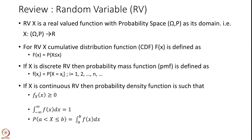If X is a discrete random variable, then we defined a probability mass function, small f of X_i, which equals the probability that random variable X takes on a particular value X sub i, where i varies from 1, 2, 3, etcetera. Please remember it is a discrete random variable and therefore it takes countable values.